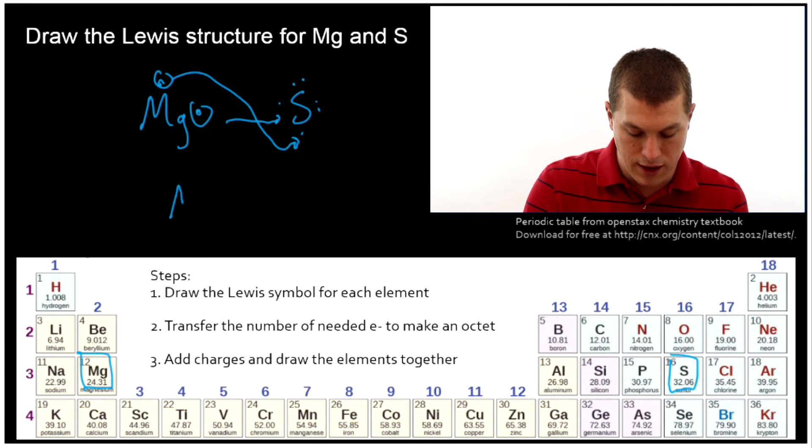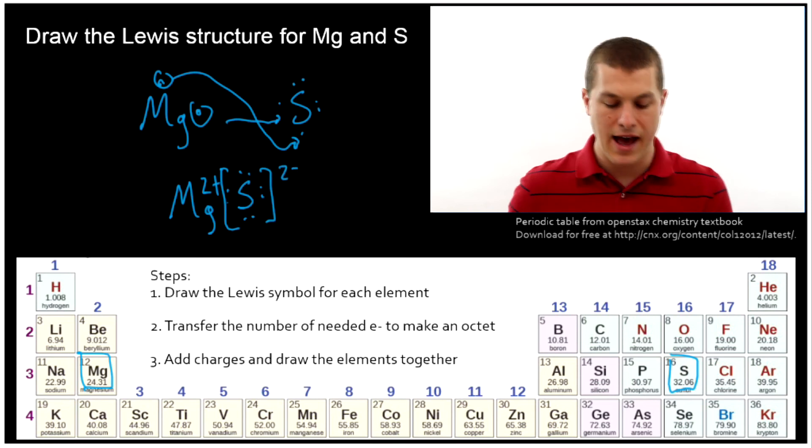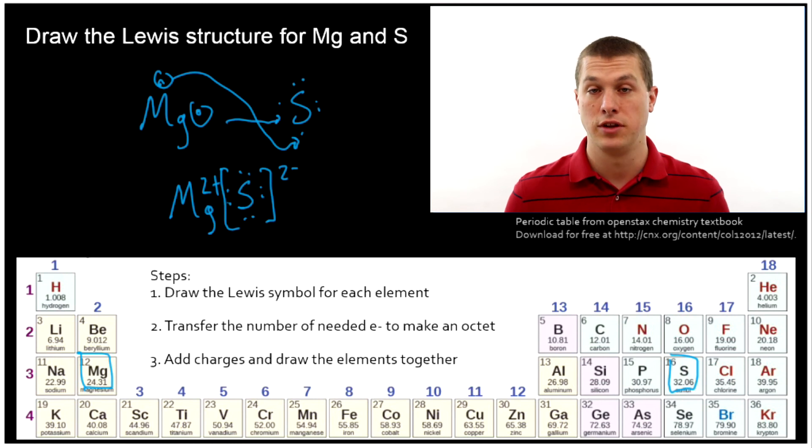So we're going to have one magnesium at a two plus charge. And then sulfur with our octet, and it's going to be in brackets and two minus. So that's magnesium sulfide, ionic compound. So notice we can predict the ratio they're going to actually combine in by drawing their Lewis symbols.